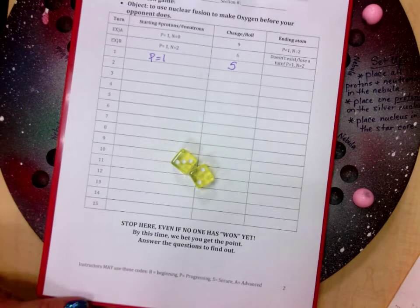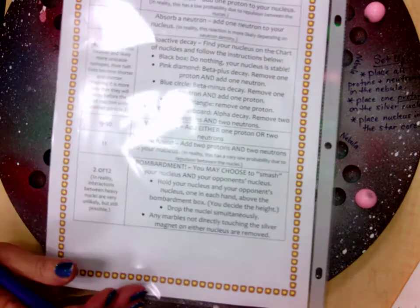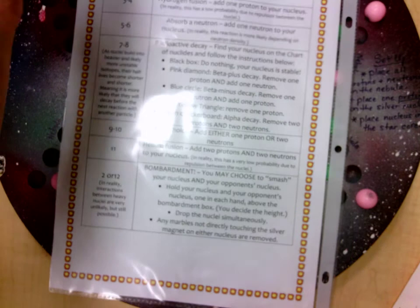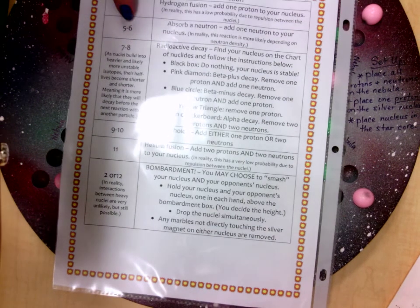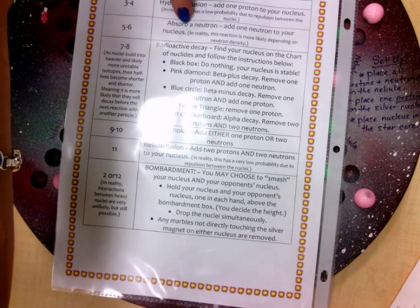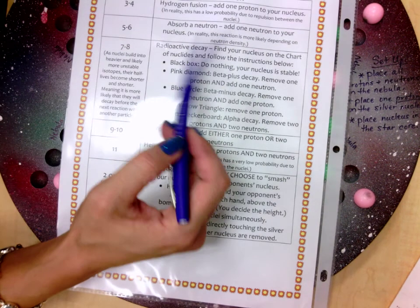Then what I'm gonna reference is the back of the instruction sheet. So the back of the instruction sheet looks like this and what we see is where it says a five, a roll of a five or a six means I have to absorb a neutron. So I'm gonna absorb a neutron, add one neutron to your nucleus.